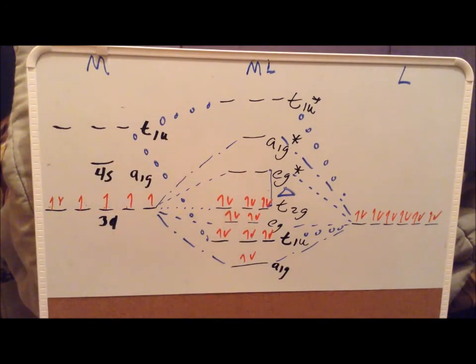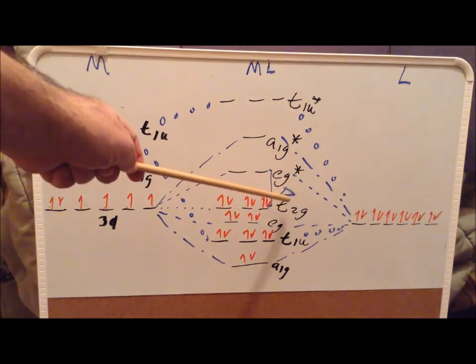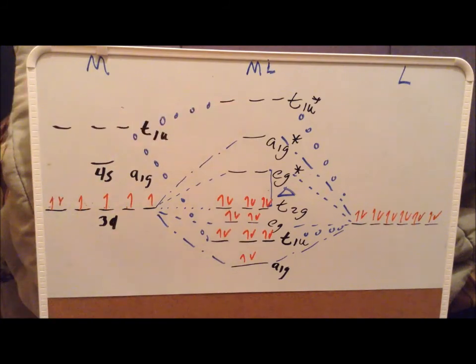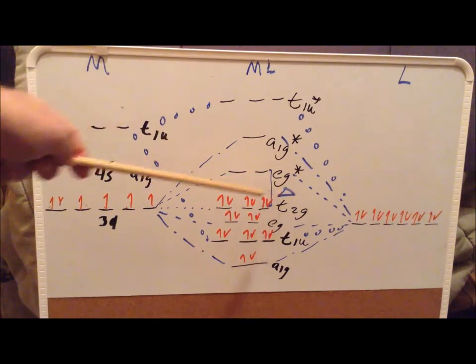So particularly even more for the octahedral case than for the tetrahedral case, we can see why the 18-electron rule seems to be followed very often for so many transition metal complexes. It makes perfect sense in the light of molecular orbital theory. And again, here we note the delta, the splitting that occurs on the d orbitals by going into an octahedral field, and this distance is denoted by delta.